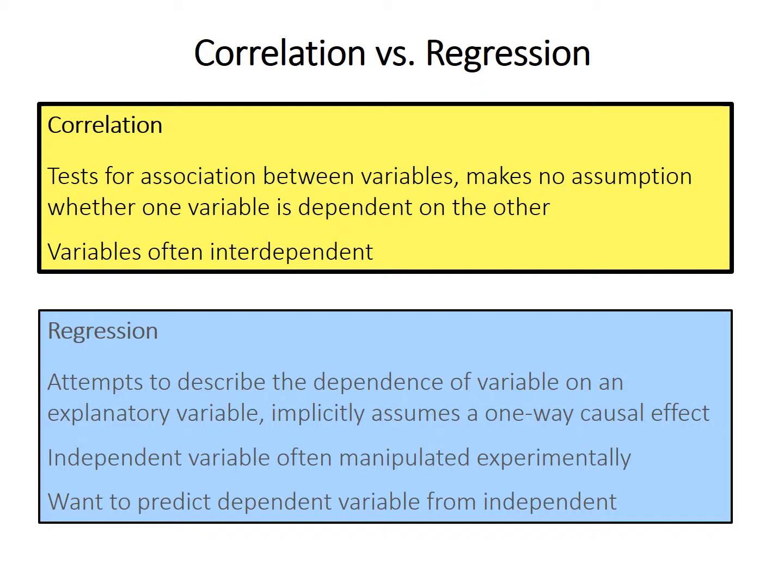There are two types of methods that use continuous data: one is called correlation, and one is called regression. Both compare two continuous variables but have different goals. Correlation is used to test for an association between the two variables — it makes no assumption of whether one variable is dependent on the other, and no assumption that changes in one are causing changes in the other. In contrast, linear regression, which we'll cover in a later video, is used when you think there is a causal effect — you're describing the dependence of one variable on an explanatory variable, or you want to predict one variable from another.